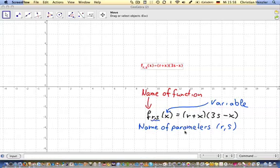So if the parameters are r and s in our case, we also have to create sliders with the names of r and s. If we want to enter the equation of this function in the algebra input down here, we first have to create the respective sliders.